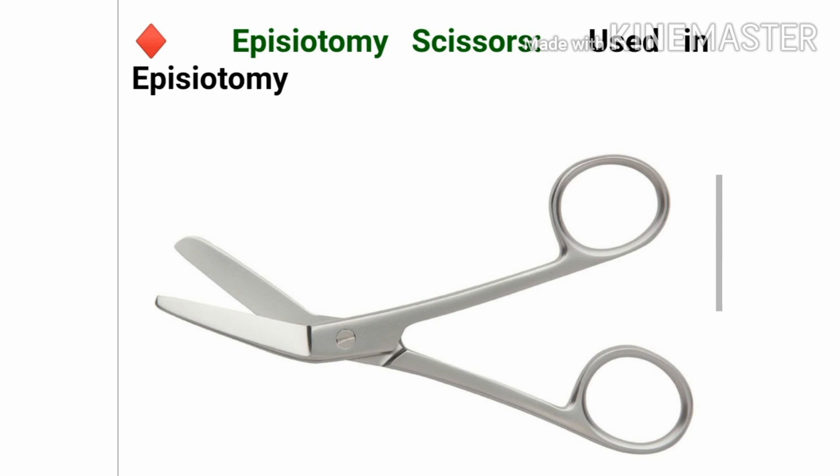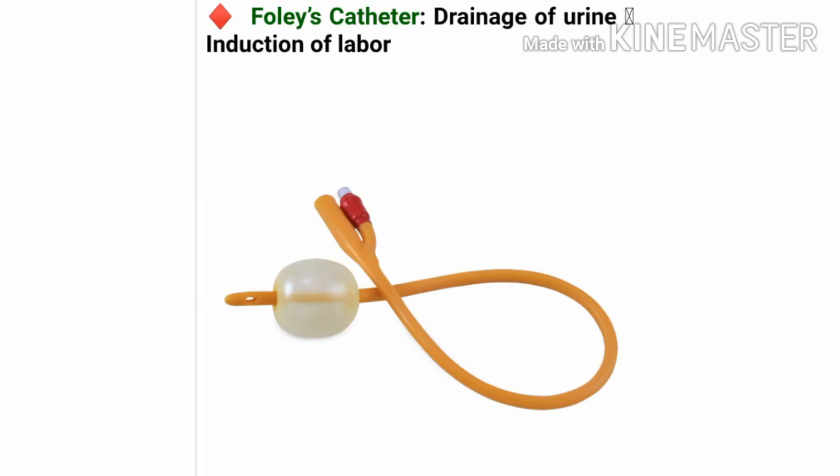Our next instrument is the episiotomy scissor. It is used in episiotomy. These scissors are designed to facilitate the performance of episiotomy, to reduce the amount of blood loss, to better judge the extent of incision necessary, and to protect the fetal head.